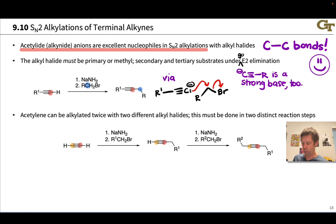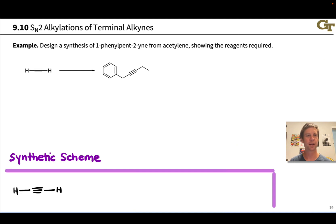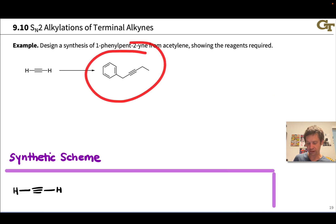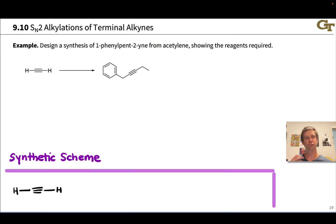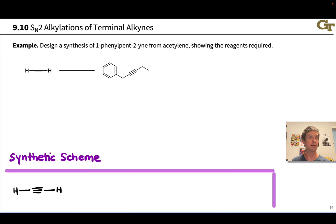It is imperative, however, that we have CH2 groups on both sides to make sure those SN2 reactions go off without a hitch and we avoid competing elimination. Let's work through a practice problem to see how we can put this SN2 alkylation of terminal alkynes to good use. Here we're asked to design a synthesis of an internal alkyne from acetylene, needing to add two carbon groups on either end — specifically an ethyl group and a benzyl group, using primary alkyl halides like ethyl bromide and benzyl bromide.